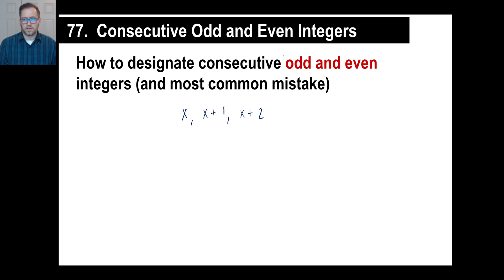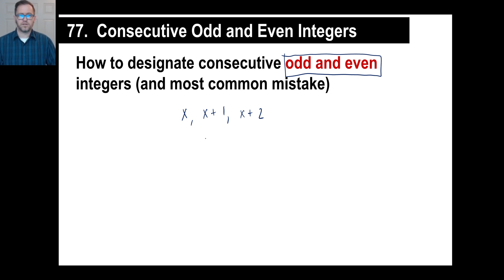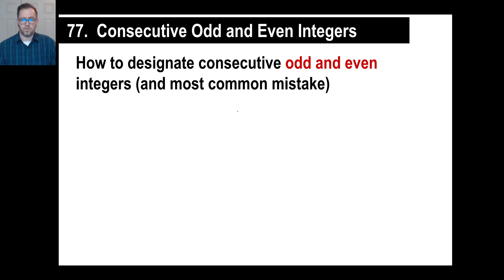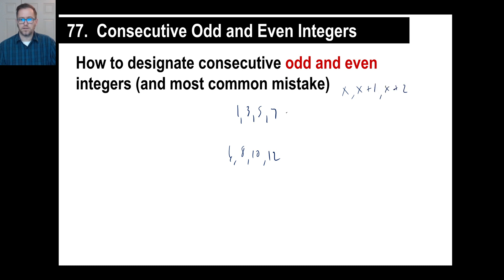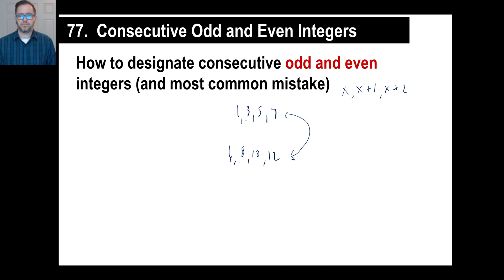This is slightly different because these are odd and even integers. Here's the most common mistake — I'll get to that in a second. When you have consecutive odd and even integers, think of some examples: 1, 3, 5, 7, and so on, or 6, 8, 10, 12, and so on. The difference is, whether odd or even, there are always two integers between one even or odd and the next. If you're doing odds, there's always 2 between them; same with evens — 2, 2, 2.